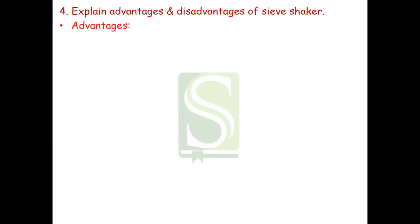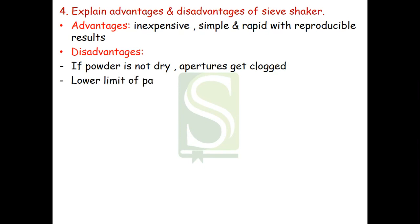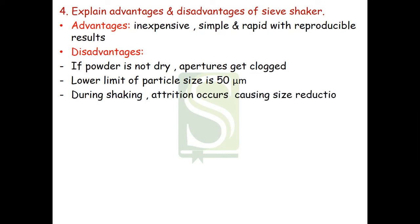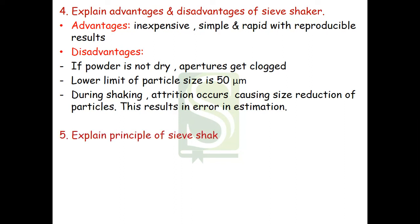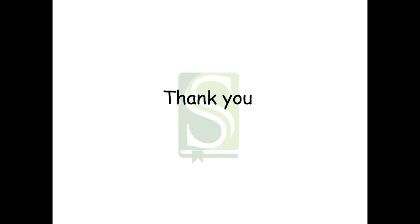The next question: explain the advantages and disadvantages of the sieve shaker. Advantage: it is inexpensive, simple, and rapid with reproducible results. Disadvantages: if the powder is not dry, the apertures can get clogged; it has a lower particle size limit of 50 micrometers; and during shaking, attrition may cause size reduction of the particles, resulting in error in the estimation. The next question: explain the principle of the sieve shaker. The powdered drug in the sieve shaker is separated according to its particle size using a number of sieves in a nest, which are then agitated for rapid size separation.